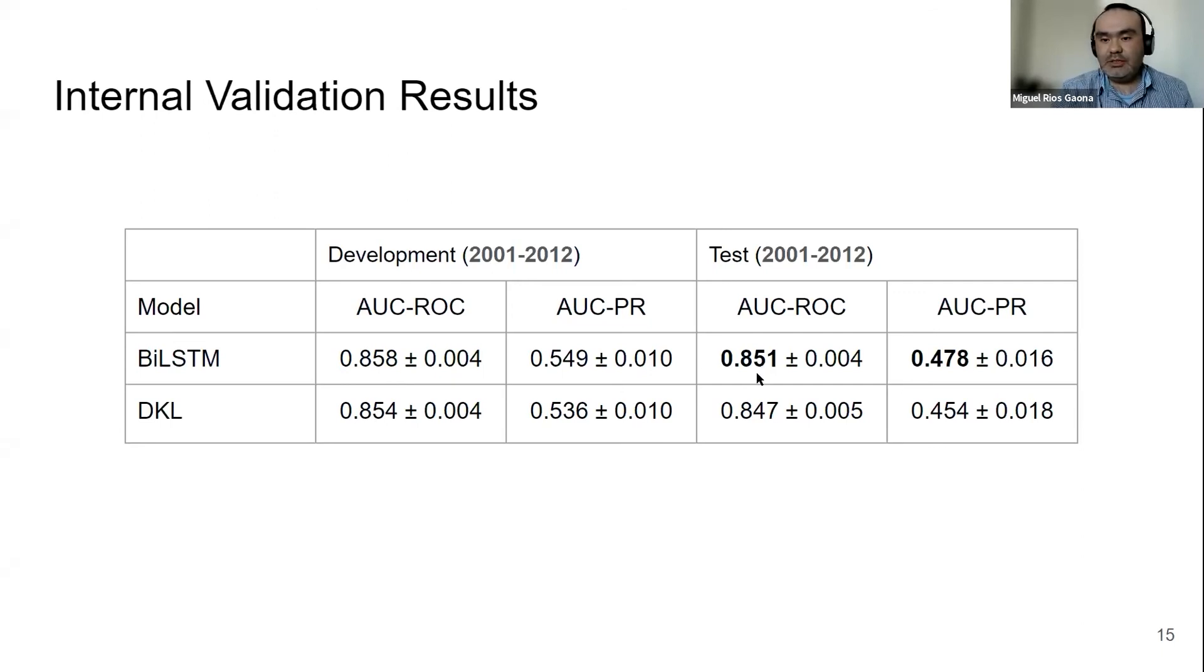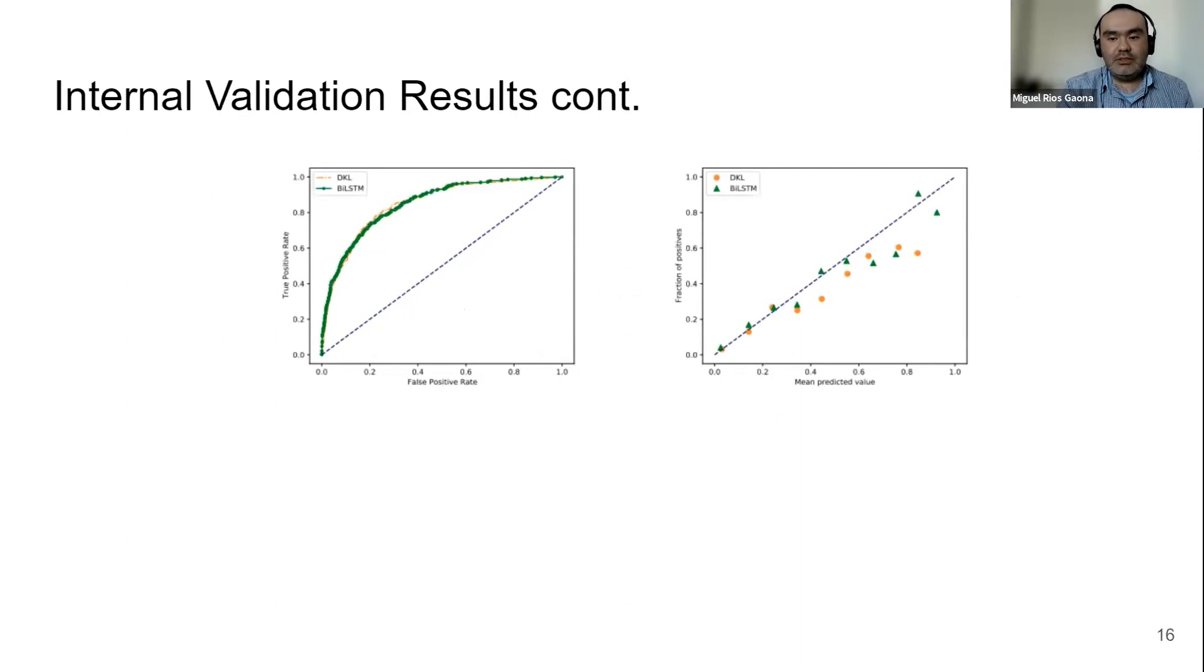That's good. So when we are in the same distribution, you can kind of trust your deterministic models. Let's have a look at the ROC curve and the calibration plot. Both of them are quite similar.